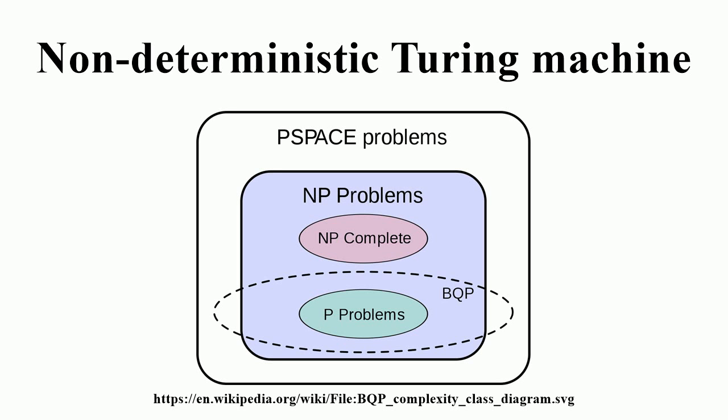A non-deterministic Turing machine accepts a string if, when the machine is started on the configuration in which the tape head is on the first character of the string and the tape is otherwise all blank, at least one of the machine's possible computations from that configuration puts the machine into an accepting state.